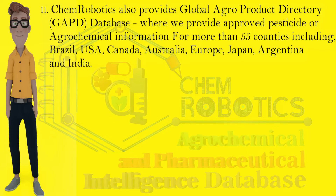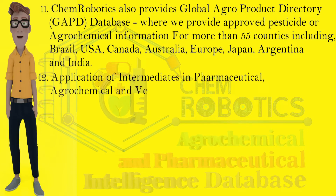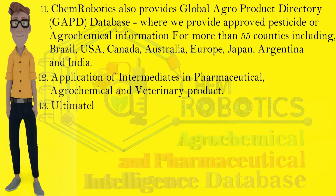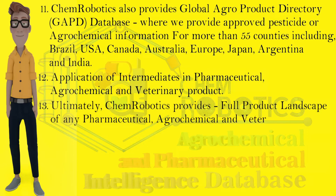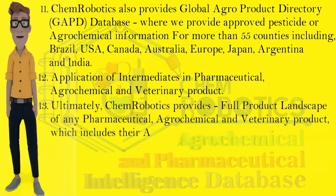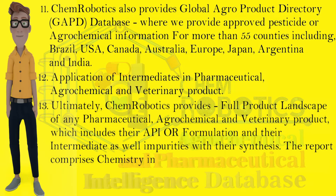Twelfth, application of intermediates in pharmaceutical, agrochemical, and veterinary products. Thirteenth, ultimately Chem Robotics provides a full product landscape of any pharmaceutical, agrochemical, and veterinary product, which includes their API or formulation and their intermediates as well as impurities.